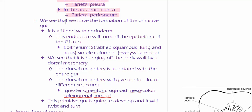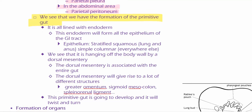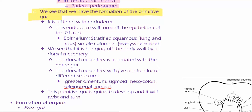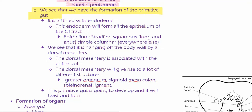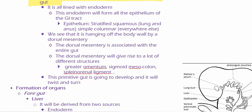We're going to talk about how we're forming this primitive gut tube. We already established that it's lined with endoderm, and we already established that the endoderm is going to form the epithelium of the GI tract.